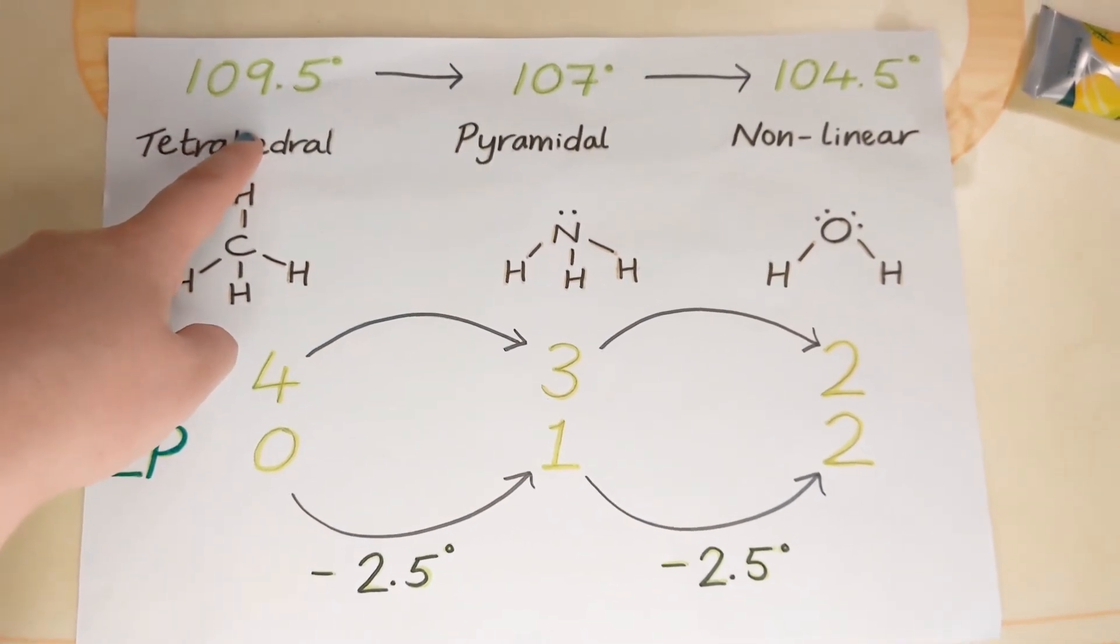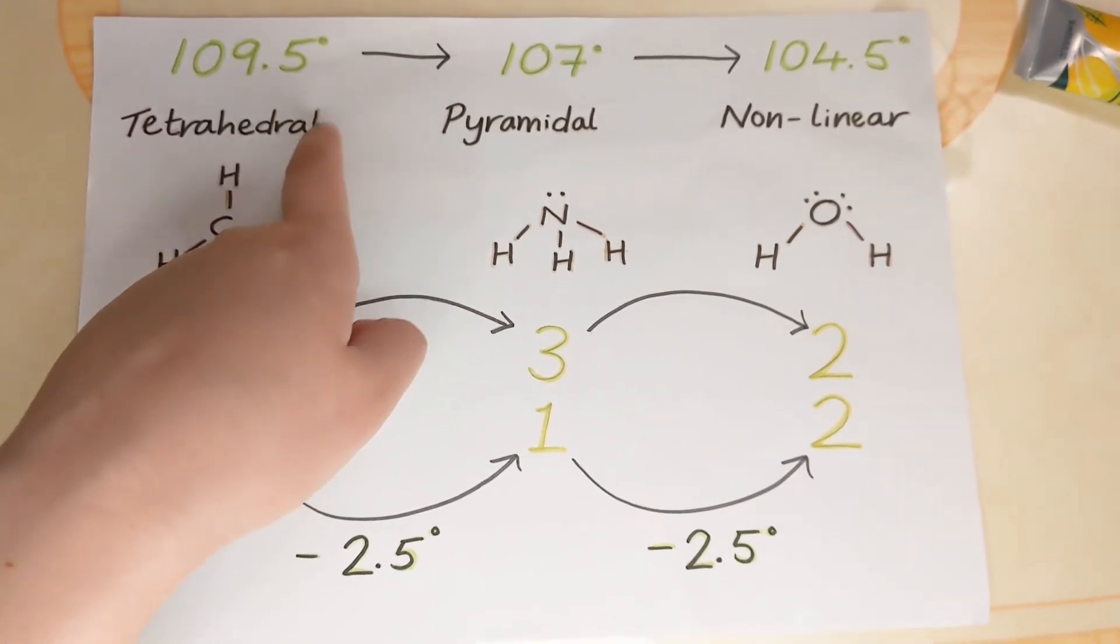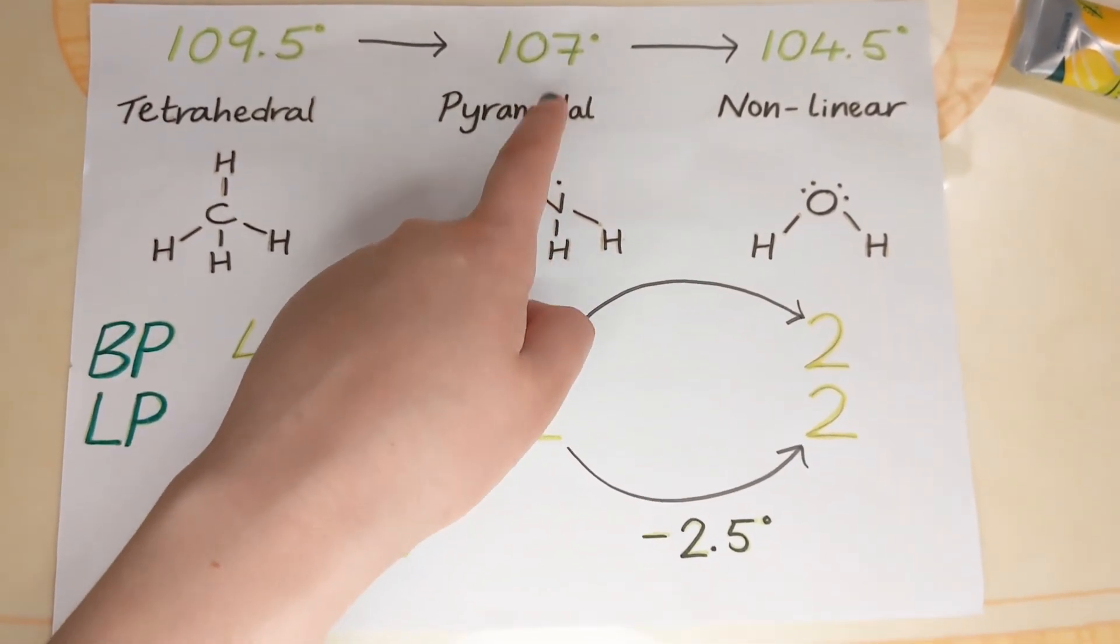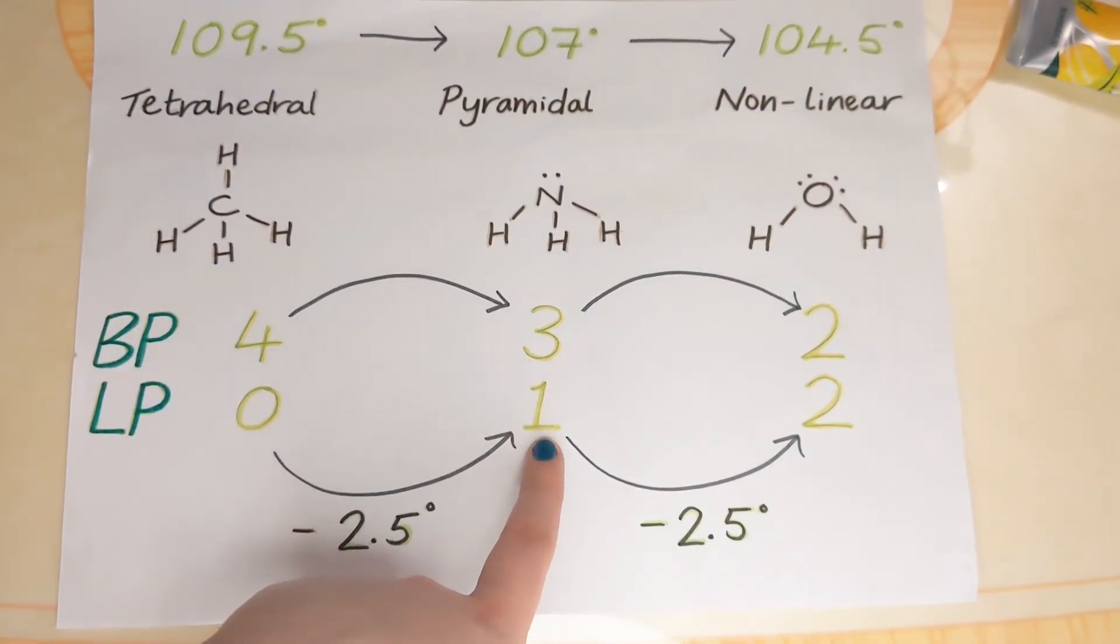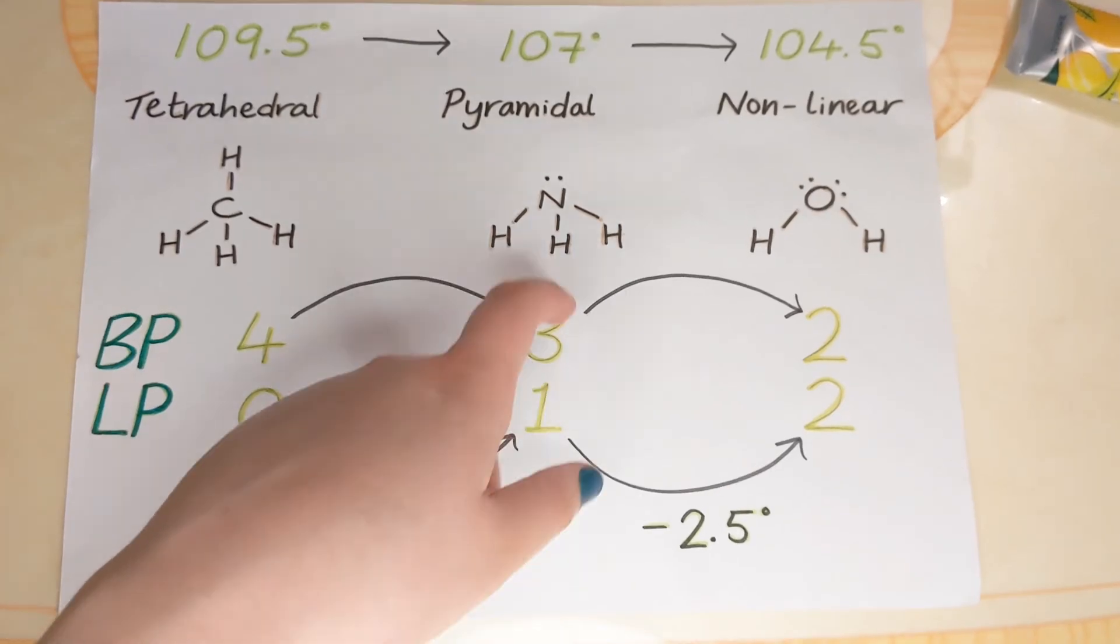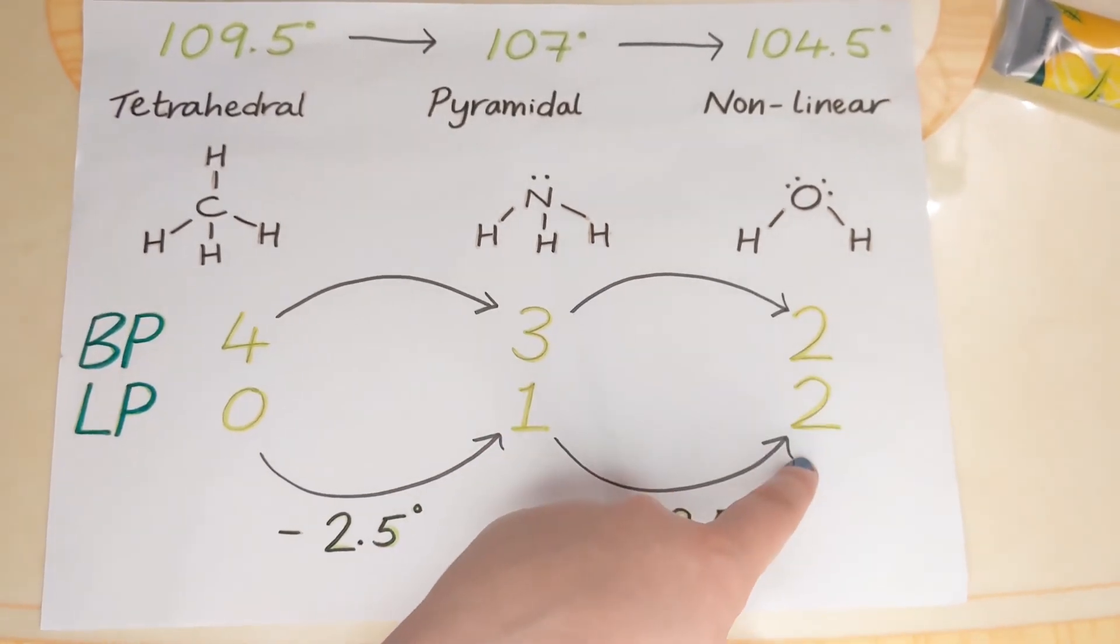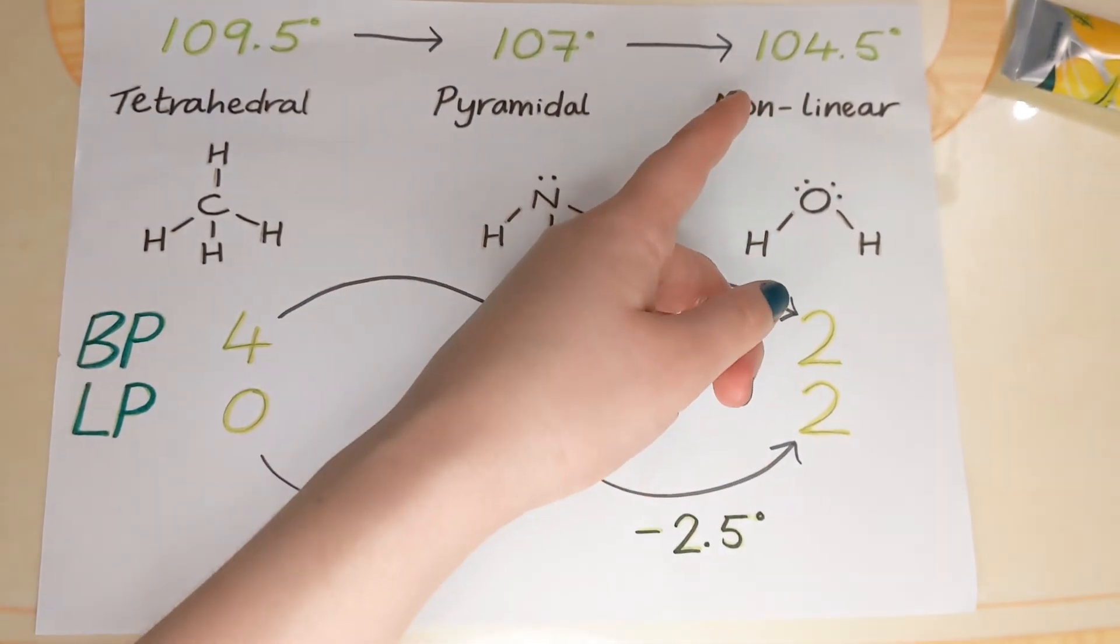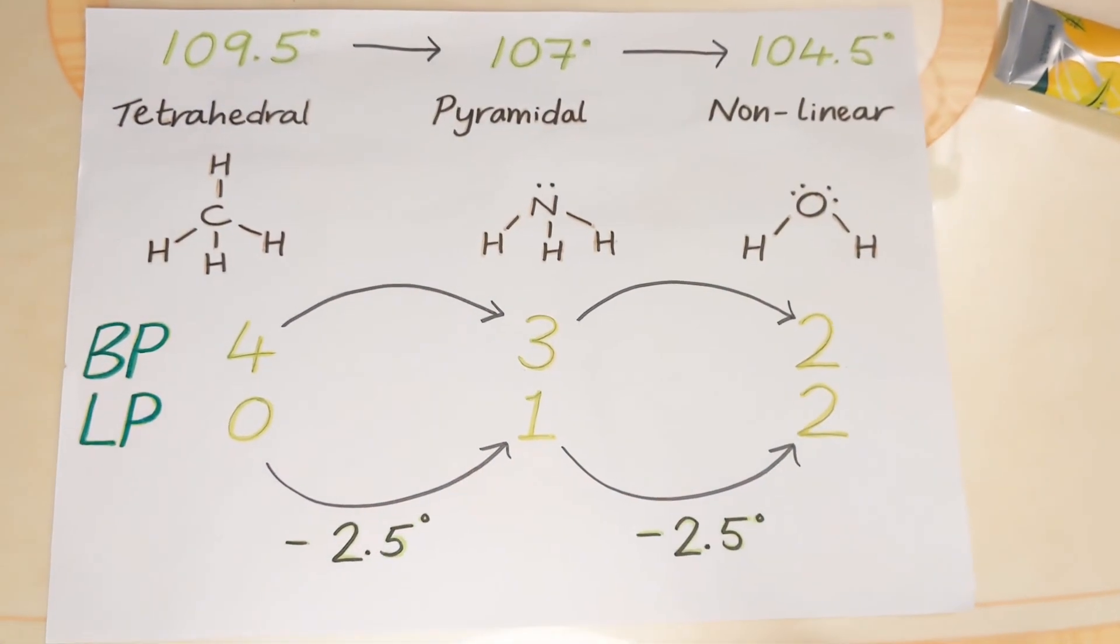So 109.5 degrees bond angle for this tetrahedral molecule decreases to 107 degrees when we add a lone pair. So we'll think of it like we're swapping a bonding pair for a lone pair. When we swap another bonding pair for another lone pair, it decreases again by 2.5 degrees to 104.5 degrees.